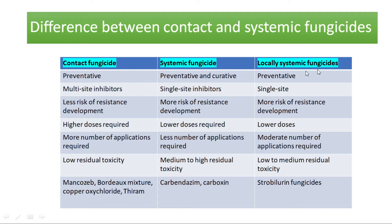The differences between contact and systemic fungicides: contact fungicides are preventative, whereas systemic fungicides are preventative and curative, and locally systemic fungicides are preventative. Contact fungicides are multi-site inhibitors — they inhibit multiple functions in the target fungus. Systemic fungicides are mostly single-site inhibitors, inhibiting only one metabolic pathway in the target fungus. Locally systemic fungicides are also single-site inhibitors. Contact fungicides have less risk of resistance development because they are multi-site inhibitors, making it very difficult for pathogens to overcome resistance.